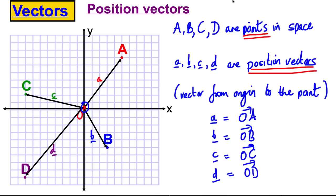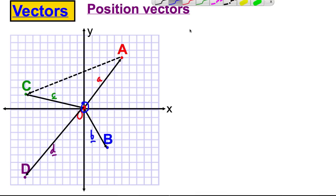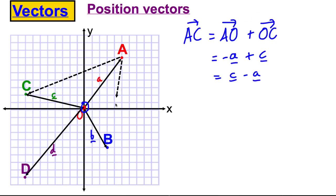Now there are other things potentially going on here. How would you get from A to C? If you wanted to go from A to C, you could use position vectors: you would go from A to O, and then from O to C. A to O is going in the wrong direction — the opposite direction — so this would be negative a, plus c, which we'd write as c subtract a.